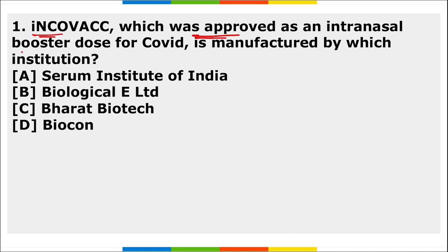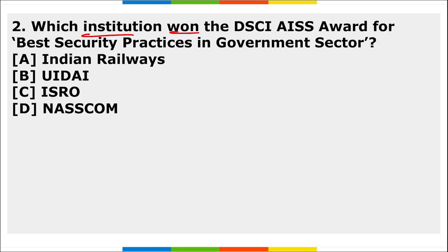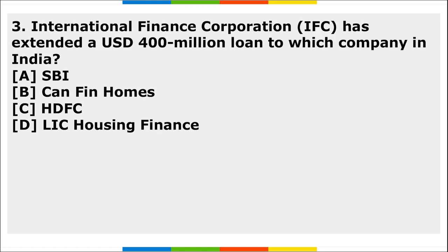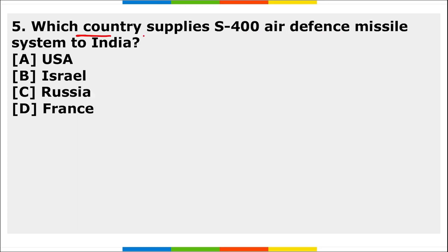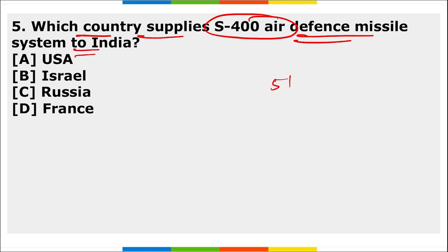Homework questions: Which institution manufactures Corbevax, approved as an intranasal booster dose for COVID? Which institution won the DSCI Award for best security practices in the government sector? IFC extended a $400 million loan to which company in India? Who has been named captain of the Indian squad for the FIH Men's Hockey World Cup 2023? Which country supplies the S-400 air defense missile system to India?